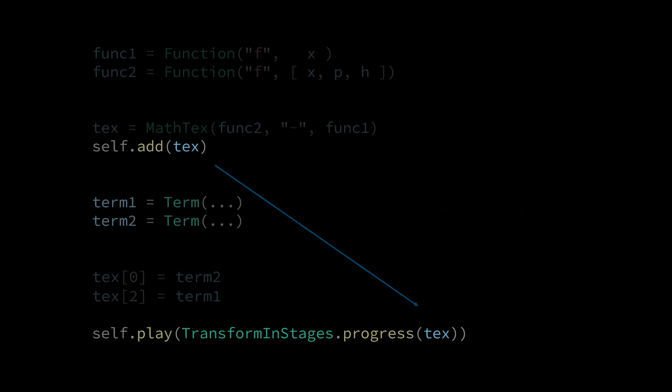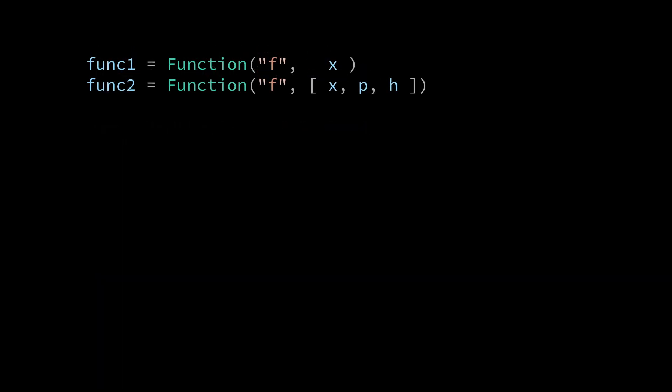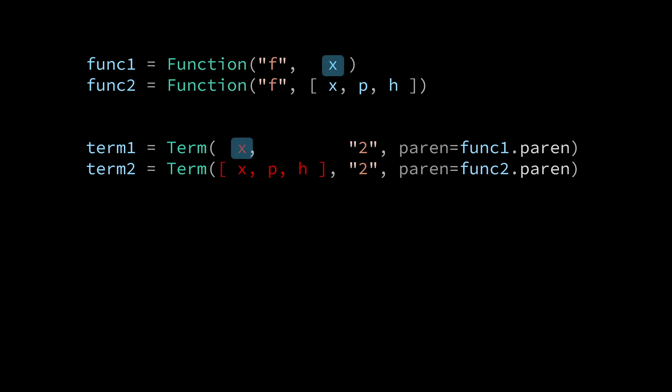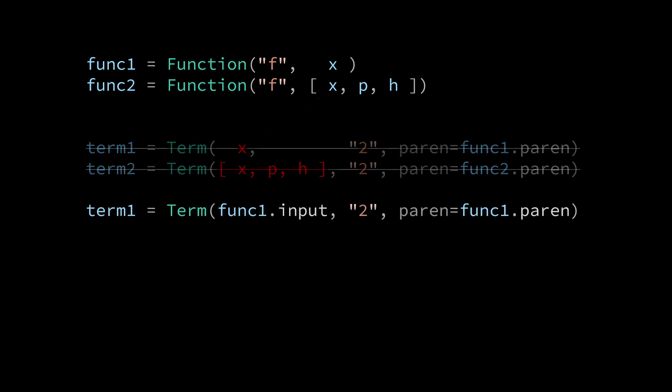So, the only piece missing is how do we construct the squared terms from the components of the function terms. Now, we won't be able to use the x and x plus h variables to construct term1 and term2, and the reason for that is that we want to link the x in func1 with the x in term1. However, at the moment of term1's construction, the reference for x points to the x in func2, so we'd be linking the x in f with the x in x squared. So instead, we'll pass in func1.input, which will pass in function1's x variable.